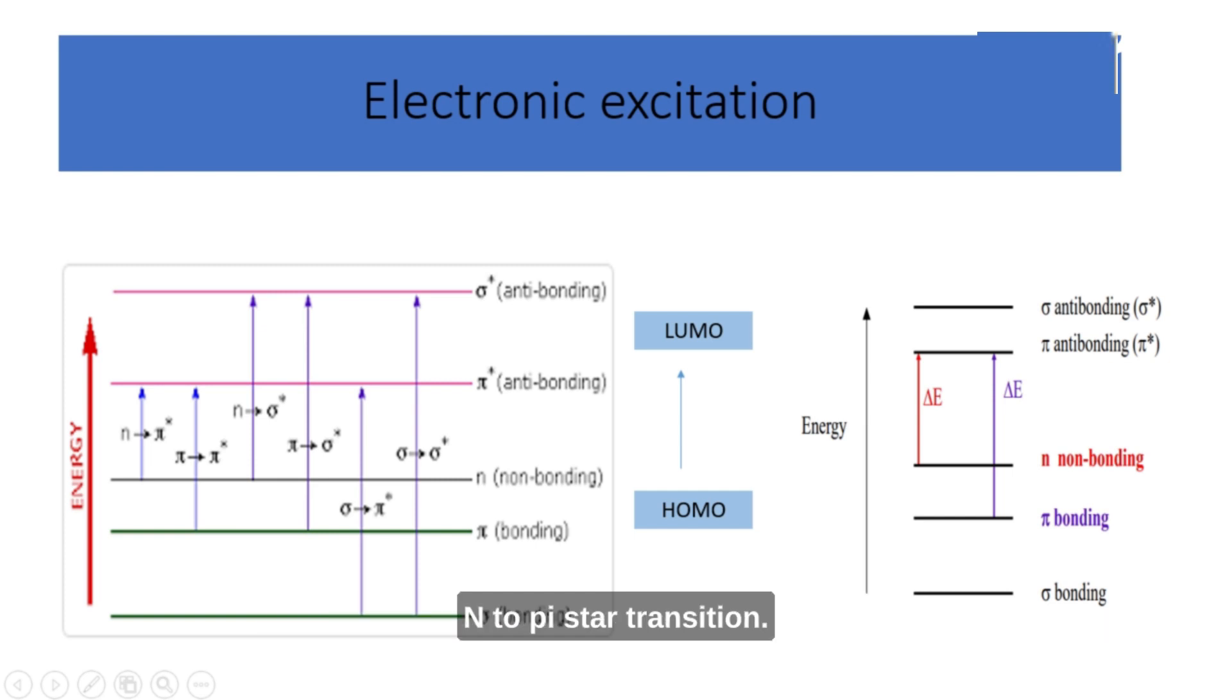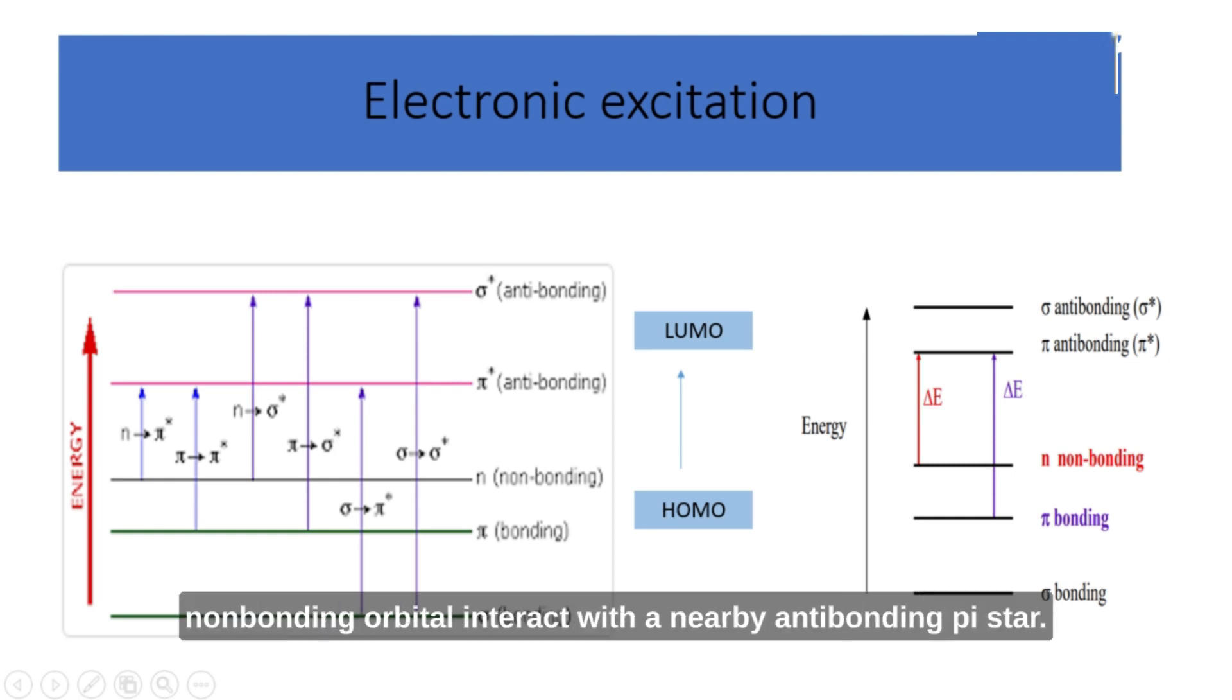N to pi star transition involves the excitation of an electron from a non-bonding N orbital to an anti-bonding pi star orbital. It occurs when a lone pair of electrons in a non-bonding orbital interacts with a nearby anti-bonding pi star orbital. This transition is commonly observed in compounds with electronegative atoms, such as oxygen or nitrogen. It usually occurs in the UV or visible region of the spectrum.